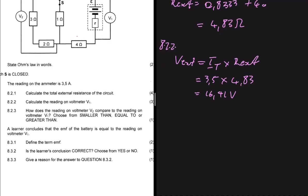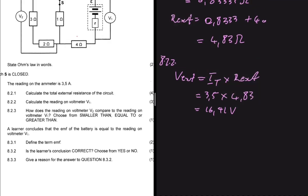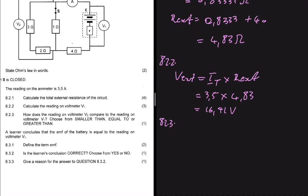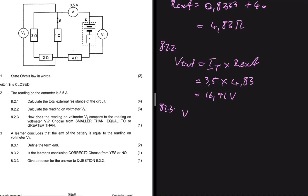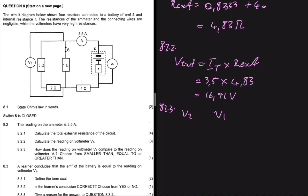Now let's do question 8.2.3: how does the reading on voltmeter V2 compare to the reading on voltmeter V1? Choose from smaller than, equal to, or greater than. We've already established that V1 reads V_external.